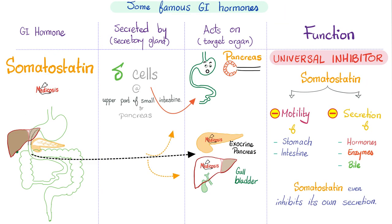Somatostatin is a universal inhibitor: it inhibits motility, it inhibits secretions of other enzymes and hormones, and it even inhibits its own secretion.